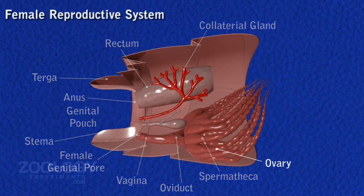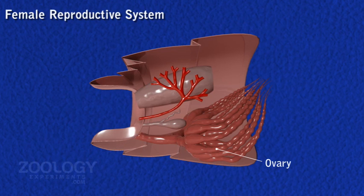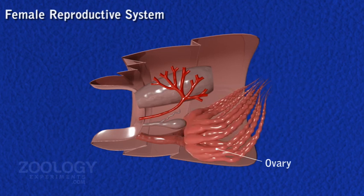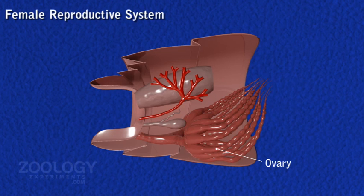A pair of yellow-colored ovaries lie in the second and sixth abdominal segments, each on either side of the hindgut and surrounded by fat bodies.